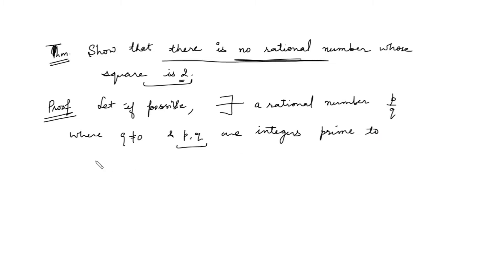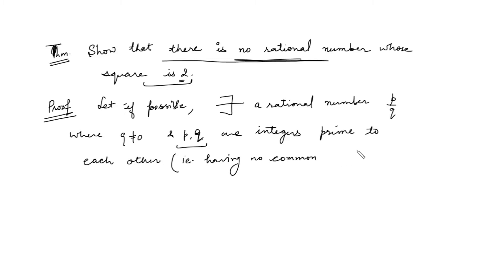P and Q are integers which are prime to each other. Prime means they do not have any common factor except 1 — they are having no common factor. If there is some common factor, you first cancel it out and make the number such that they have no common factor. They are prime to each other. So let, if possible, there exists a rational number P/Q, where Q is non-zero and P and Q are integers prime to each other, whose square is equal to 2.